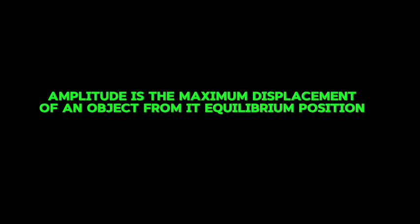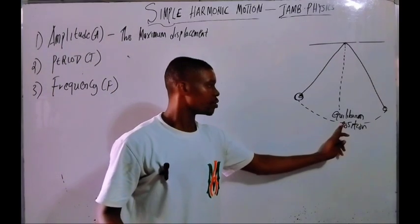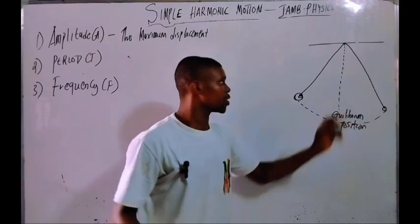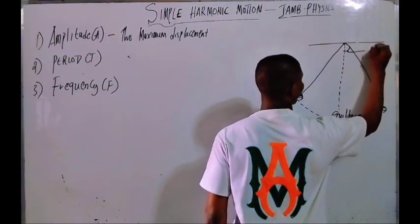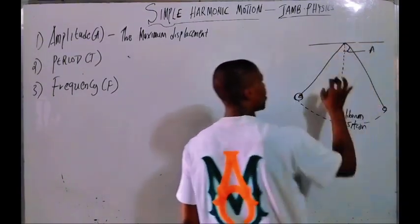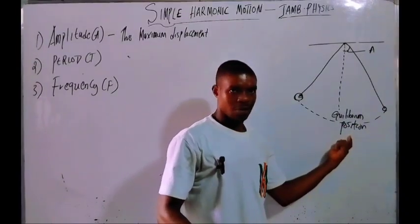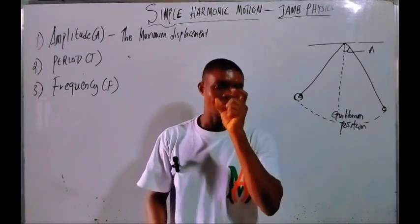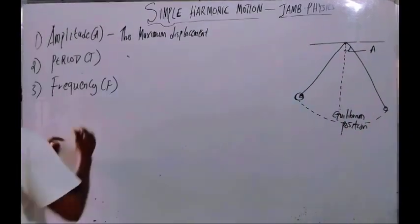Amplitude is the maximum displacement of an object from the equilibrium position. That maximum displacement from the equilibrium position is called amplitude.